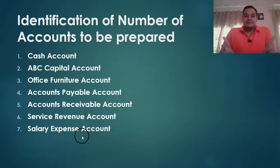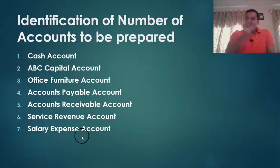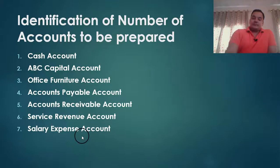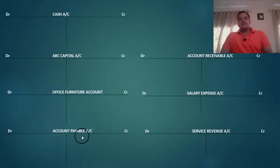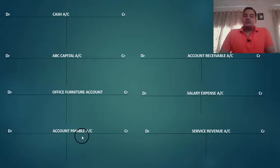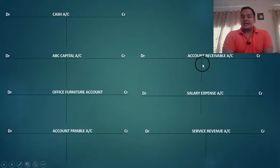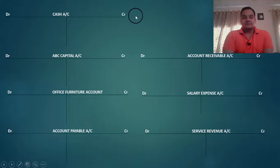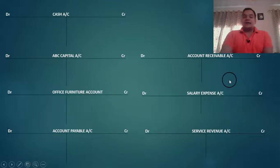All these accounts will be in the form of T. We discussed in lecture number 2 about types of accounts — all accounts have a T-shape. The left side is the debit and the right side is the credit. We have cash account, ABC capital account, office furniture account, accounts payable account, accounts receivable account, salary expense account, and service revenue account — all put in the form of a T-shape.